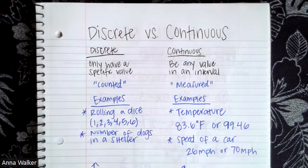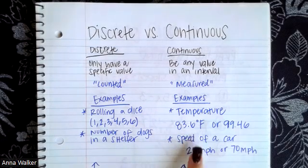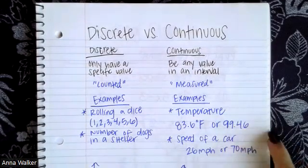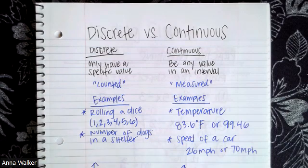The other kind of data is known as continuous data. Continuous data can be any value within an interval, meaning it's data that's measured. For example, if we want to measure the temperature outside, we can get very specific — it could be 83.6 degrees or 99.462 degrees. It can be very, very specific, it can be a range, and it can have a fractional part to it.